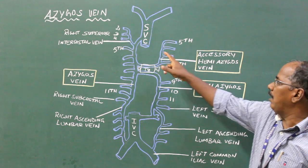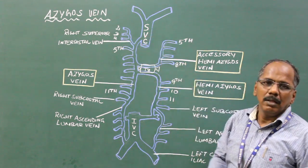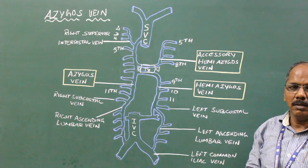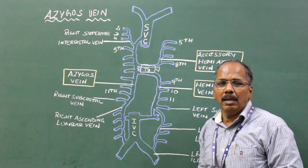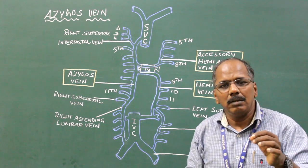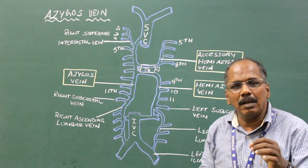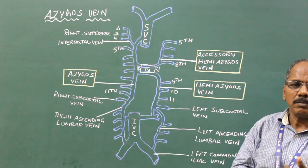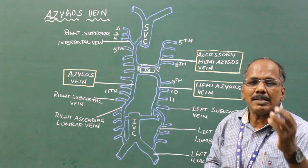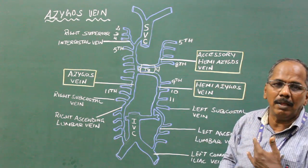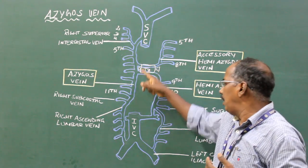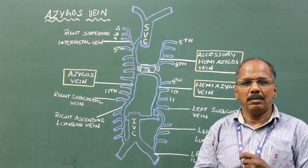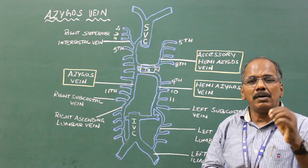If there is an obstruction in the superior vena cava, the azygous vein plays an important role in the collateral connection between the superior and inferior vena cava. Thank you.